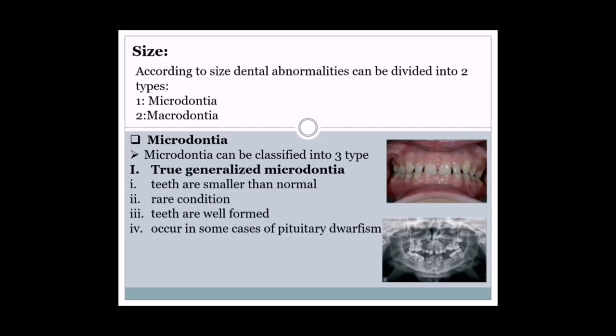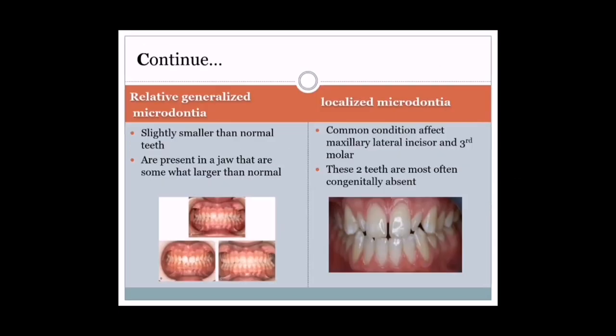Number one: true generalized microdontia, in which all teeth are smaller than normal. It is a rare condition in which teeth are well-formed, occurring in some cases of pituitary dwarfism. An X-ray is shown demonstrating true generalized microdontia.